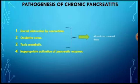For pathogenesis of chronic pancreatitis, there are four mechanisms: number one, ductal obstruction by a chronic cause; number two, oxidative stress; number three, toxic-metabolic effects; and number four, inappropriate activation of pancreatic enzymes. All of these can be caused by alcohol.